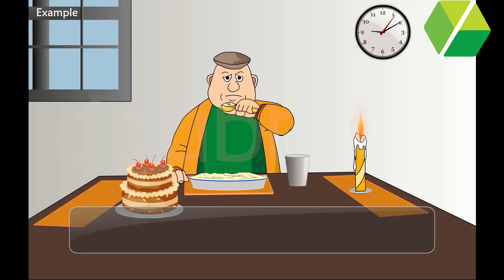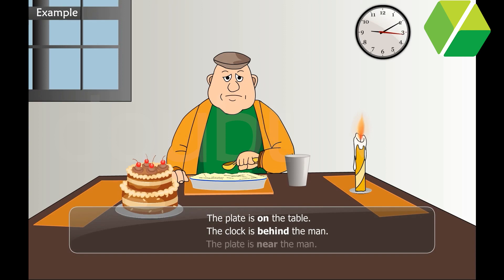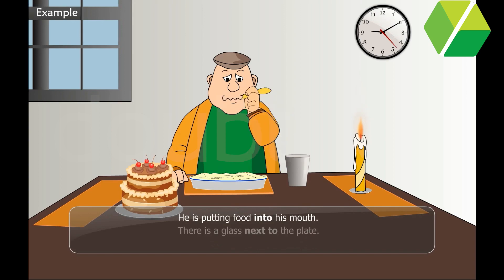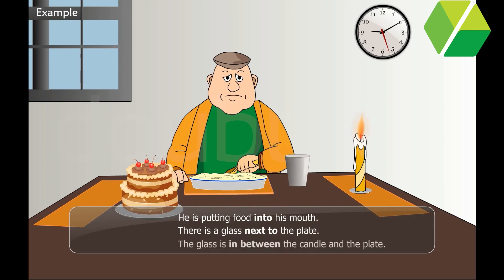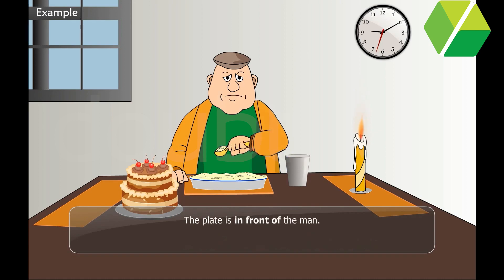These are the prepositions of place and direction. The plate is on the table. The clock is behind the man. The plate is near the man. He is putting food into his mouth. There is a glass next to the plate. The glass is in between the candle and the plate. The plate is in front of the man. The candle is away from him.